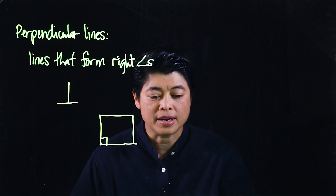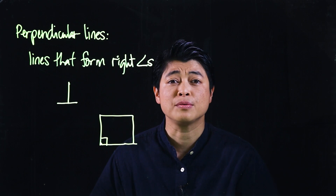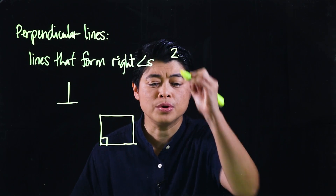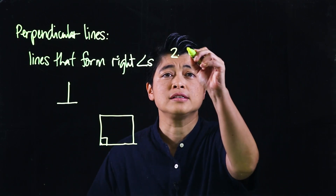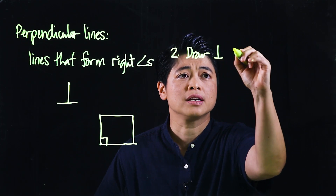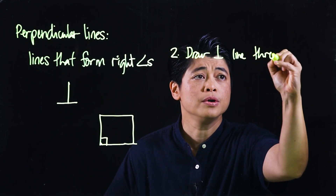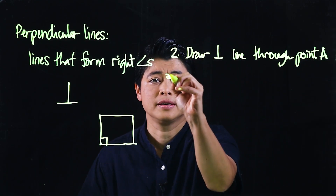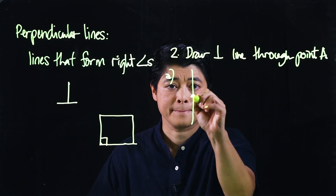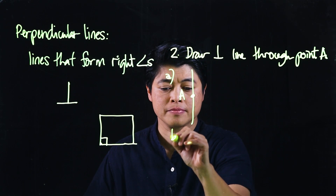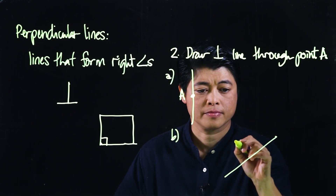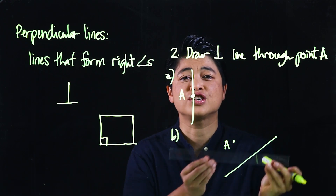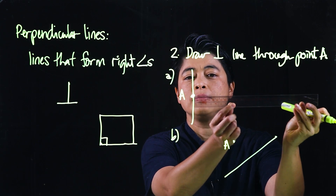The exercises we will be doing are on page 120. Problem number two says: draw perpendicular lines — draw a perpendicular line through point A. If I use a straight edge as my tool, the perpendicular line will look like that.